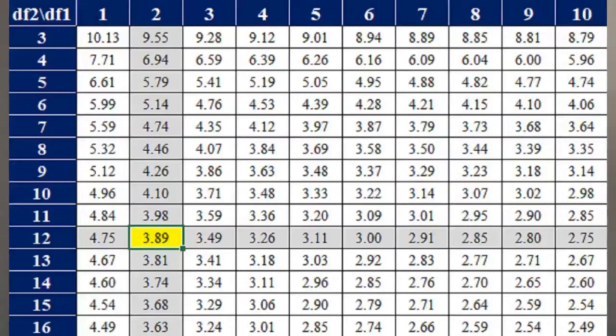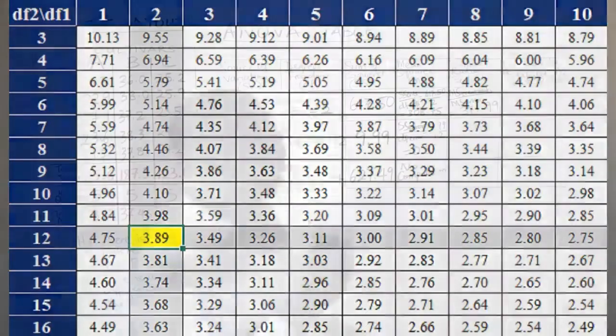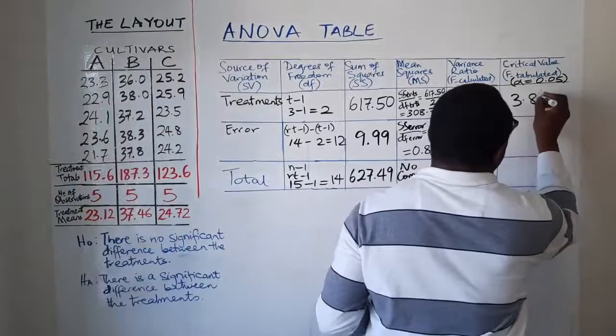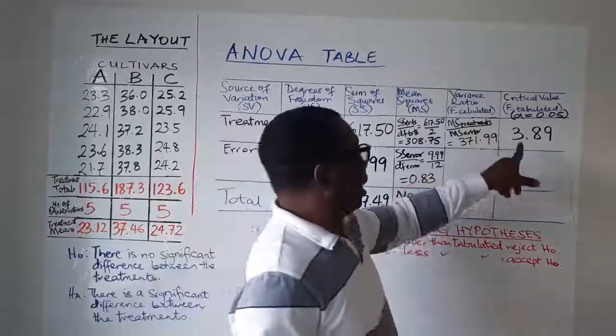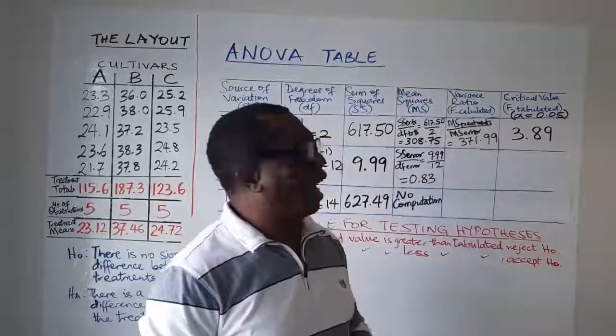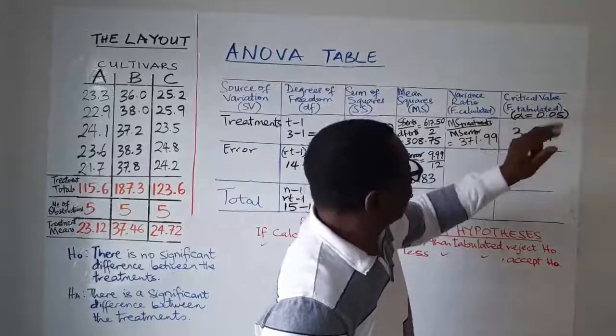So that's the way you do it. So you start from column 2, trace it down until you get to row 12, row 1, row 2, row 3 and so on until you get to 12. So whatever value you have there is your F tabulated. And in this exercise, it is 3.89. So having obtained our 3.89 as the F tabulated, we need to now compare it with this value of F calculated to be able to take our decision.